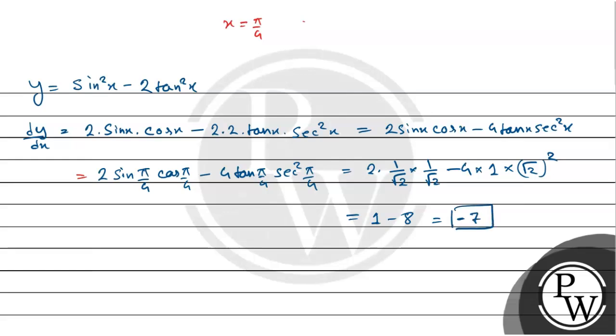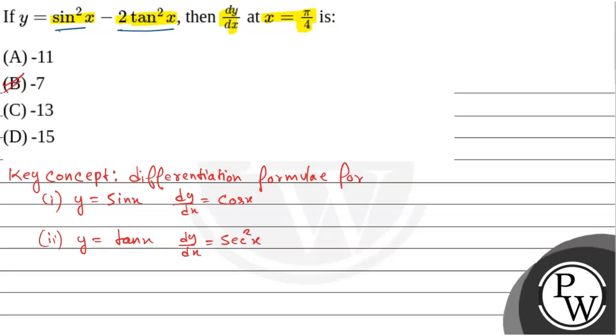So, dy/dx, dy/dx at x equals to π/4, is equals to what? Minus 7. And, this is our final answer. That means, our option B is correct, that is, minus 7. Hope you understand it. Let's talk about it.